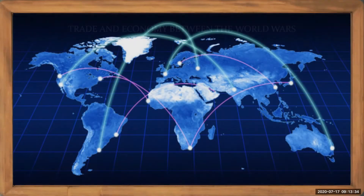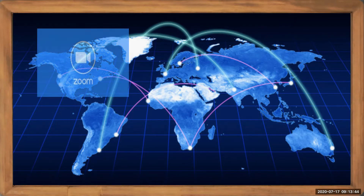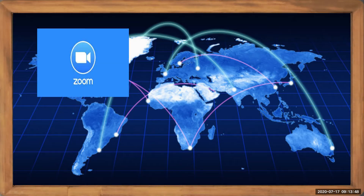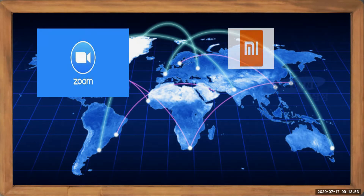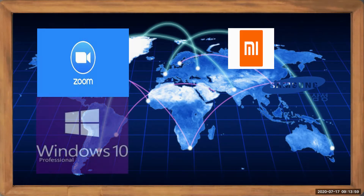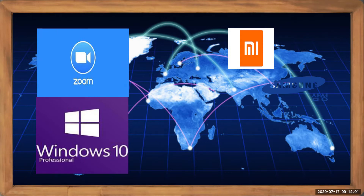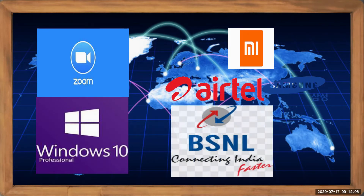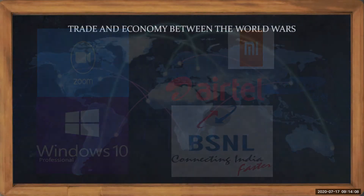Remember we are living in a global world or in a global economy. The best example is with a Zoom class. Zoom is based in USA and we are using a Chinese mobile phone or a Korean mobile phone with American software like Windows 10, and we are using an Indian company like Airtel or BSNL to communicate. So this is the example of globalization.